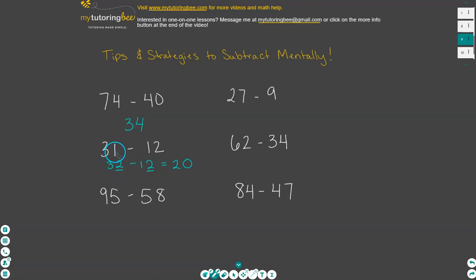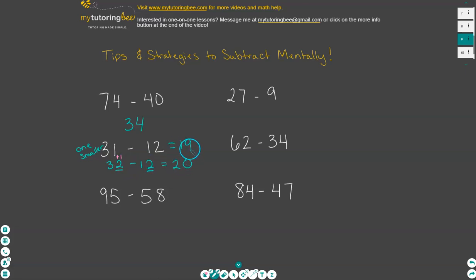But 31 is one smaller than 32, so that means our answer is going to be one less than 20. So then for this answer, it actually equals 19. So one less here means one more here. Basically, I added one to make this problem easier to do in my head, and then when I got my answer, I had to subtract that one back away. First we added one to make it easier, but then we have to remember to subtract that one from our answer to reflect what we actually had in our original problem.